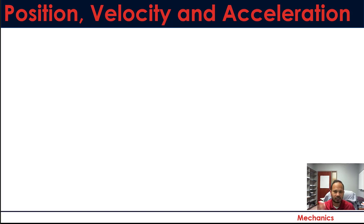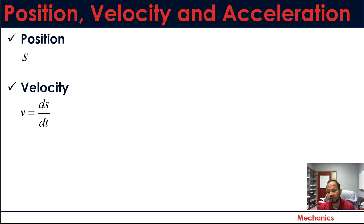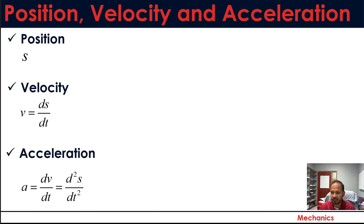Let's take a step back. You already know what position, velocity, and acceleration are, but we need a quick review so we can jump into the higher orders. Position is the distance from the origin to your current location. Velocity is defined as the first order derivative of position with respect to time. Acceleration is the change of velocity with respect to time — the second order derivative of position.